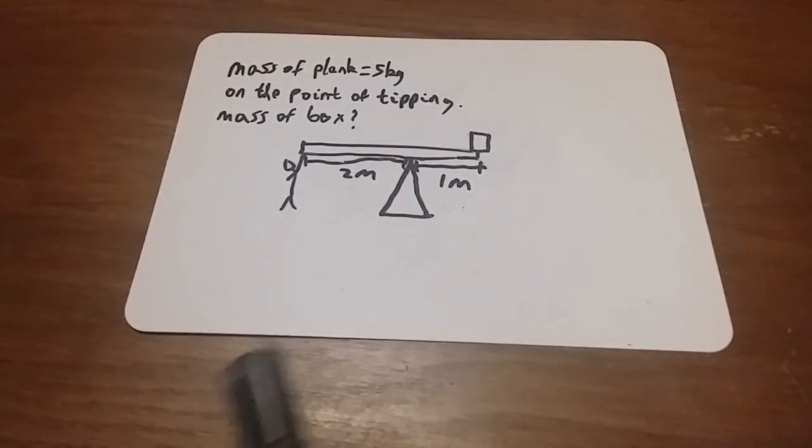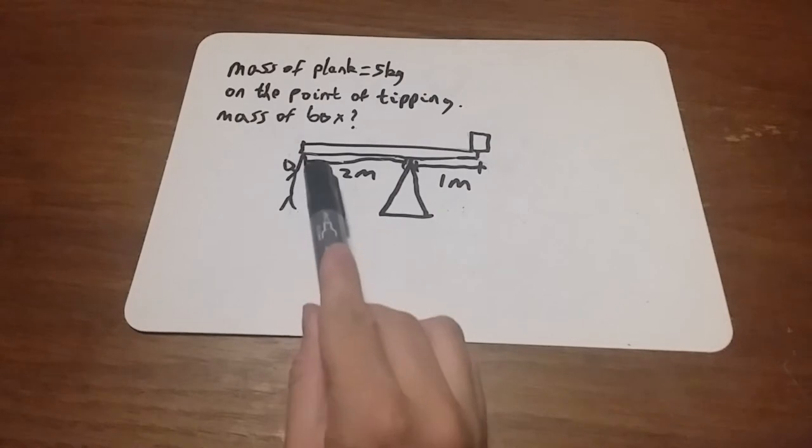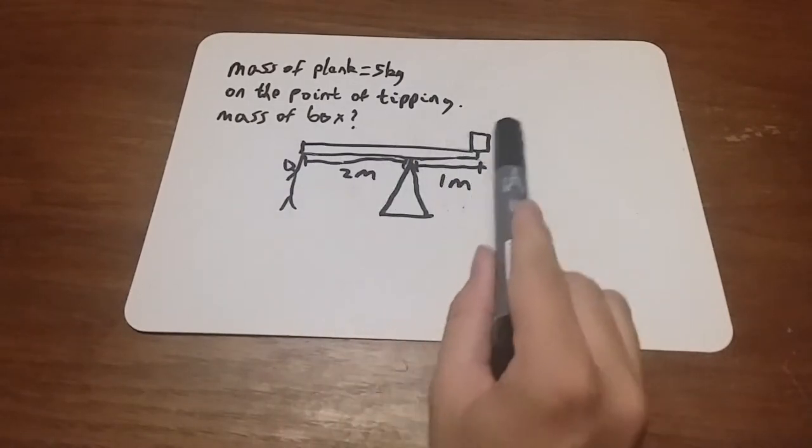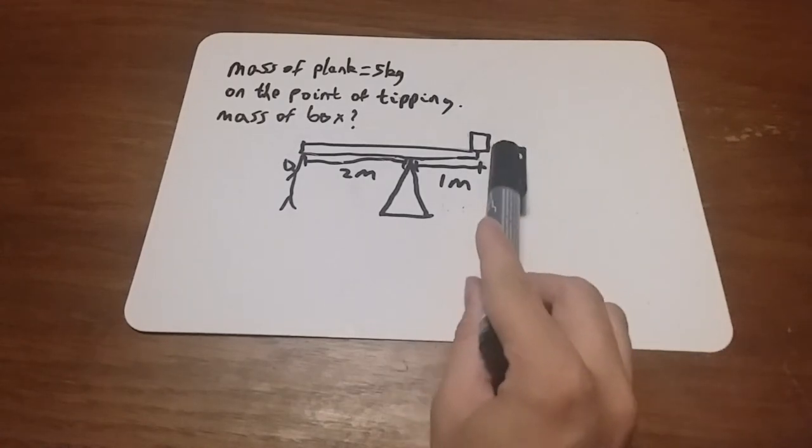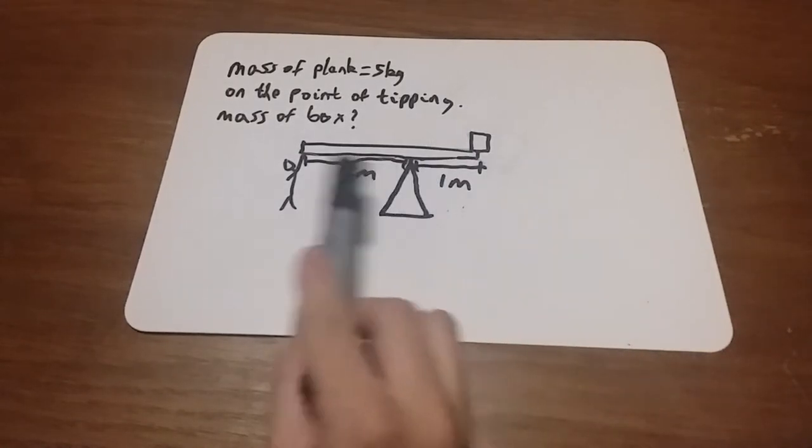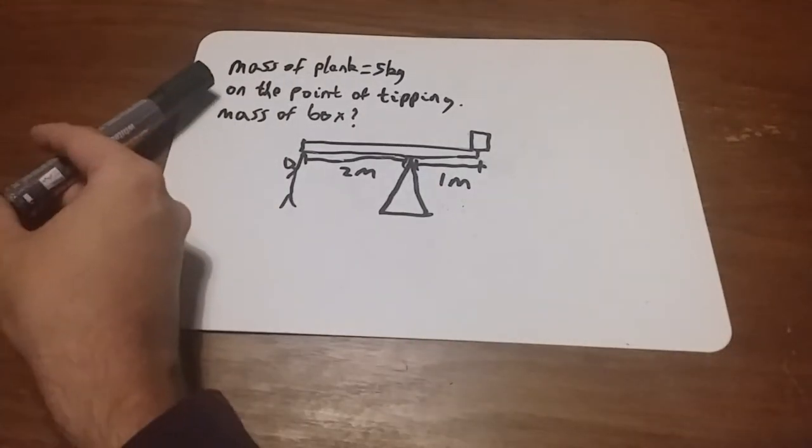Today's lesson is about things on the point of tipping. We've got a setup here like a seesaw. It's a uniform plank, and we've got someone holding up this end. On the other end there is a box, and the goal is to work out the mass of this box, given the distances of two meters and one meter. The important bit is it's on the point of tipping.